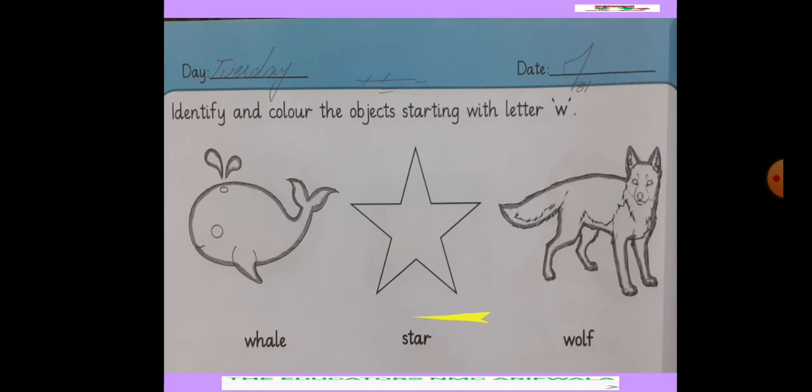Next object is star. Star does not start with W. This is why we do not color star.